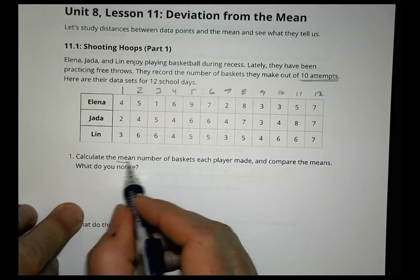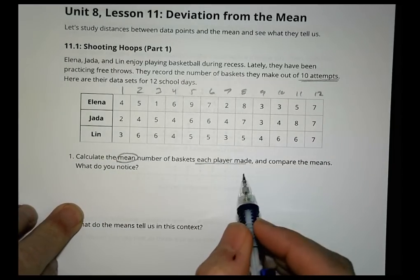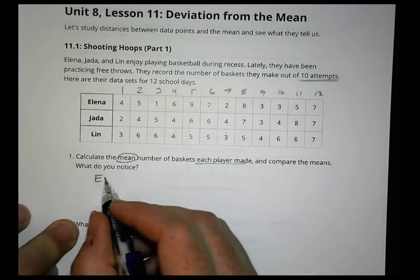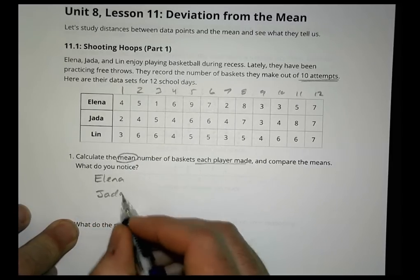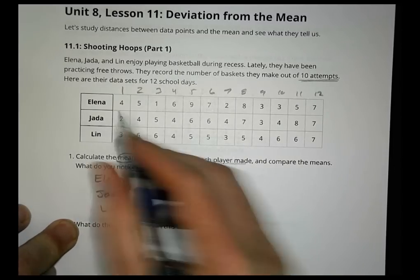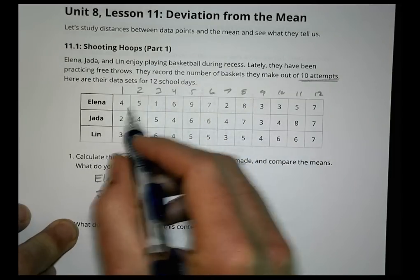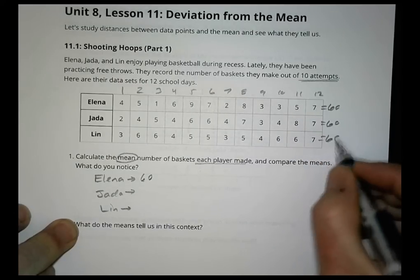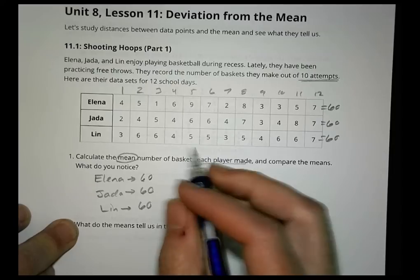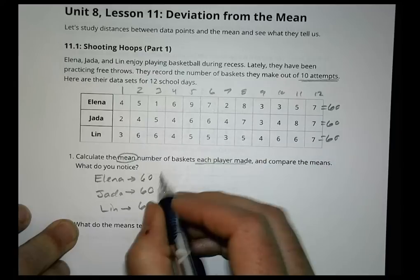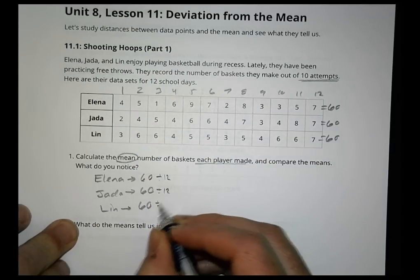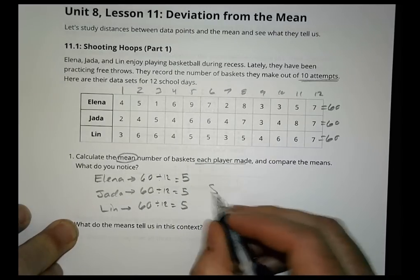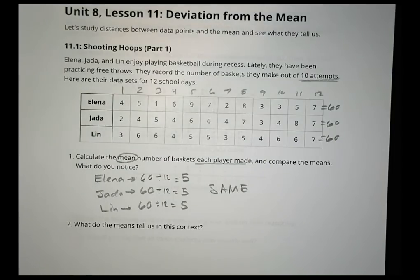The activity wants you to calculate the mean number of baskets each player made and compare the means. So we have Elena, Jada, and Lynn. When we calculate their means, we add up the sum of all their data values. When you add all of Elena's up, you end up with 60. Jada's also equals 60, and Lynn's also equals 60. There are 12 school days, so we divide each one by 12, and we get a mean of 5, a mean of 5, a mean of 5. They are all the same.